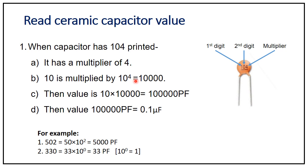The multiplier for 104 is 10,000 (10 raised to 4). So the calculation is 10 × 10,000, giving a final value of 100,000 picofarads.